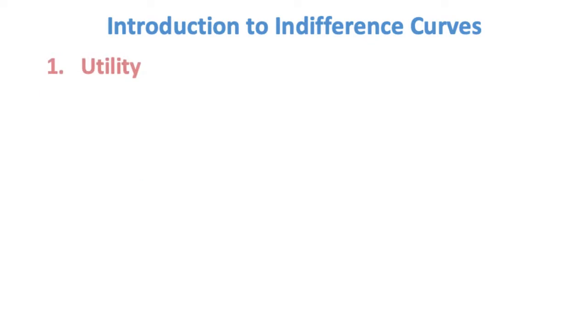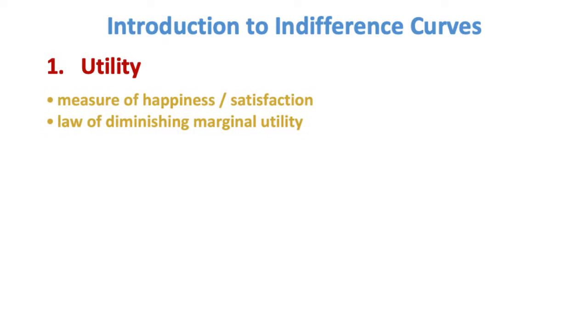We begin with a measure of happiness called utility in economics, and we will see how it diminishes as consumption increases. We move to how preferences are represented when given the choice between bundles of two goods.